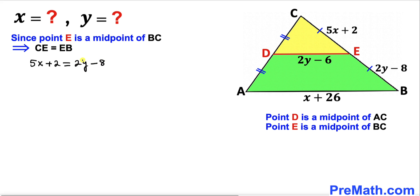Let me move this 2y to the left-hand side and move this 2 to the right-hand side. So we get 5x minus 2y equals negative 8 minus 2, which is negative 10. Let's call this our equation number 1.